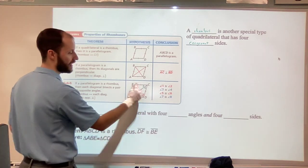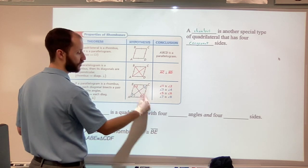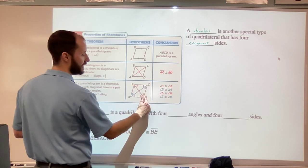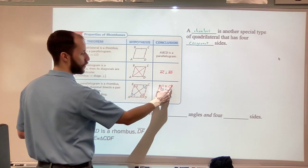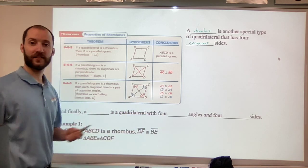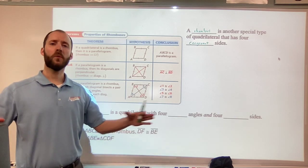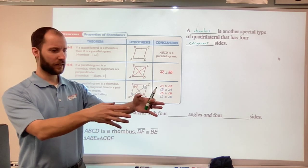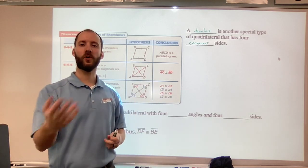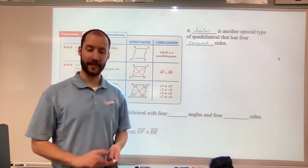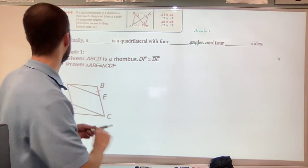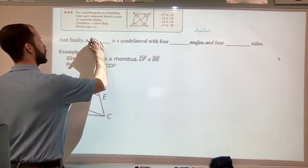So the opposite angles, angle B, angle D, that are congruent because it's a parallelogram. Angle B, angle D also get bisected. So angle 1 congruent to angle 2, angle 5 congruent to angle 6. And now put all that together. Take a rectangle, take a rhombus, and create a mashup. So four right angles, four congruent sides. So I think you've heard of this before. A square.